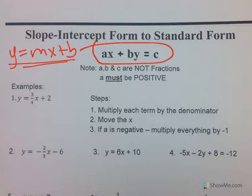That means you want to get the number in the equation by itself. A, b, and c cannot be fractions, so you need to make sure you take note of that. And a must be positive.